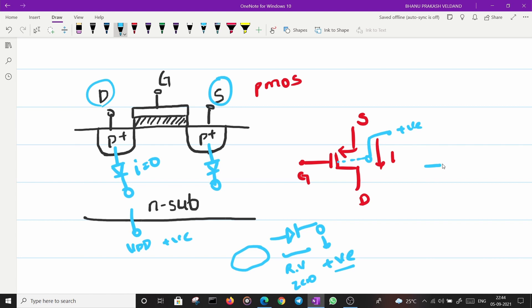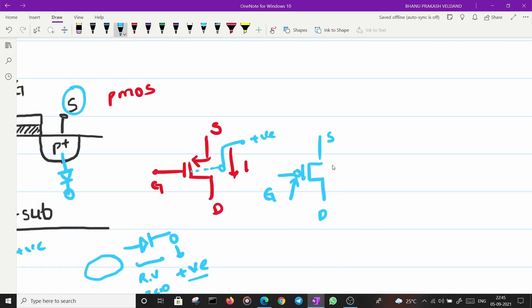The carriers are holes in PMOS. So the direction of current flows from source to drain. The arrow indicates the direction of current. The PMOS operates exactly opposite to the NMOS. In NMOS when the gate is high there is connection between source and drain. In PMOS when the gate is high there is no connection between source and drain.